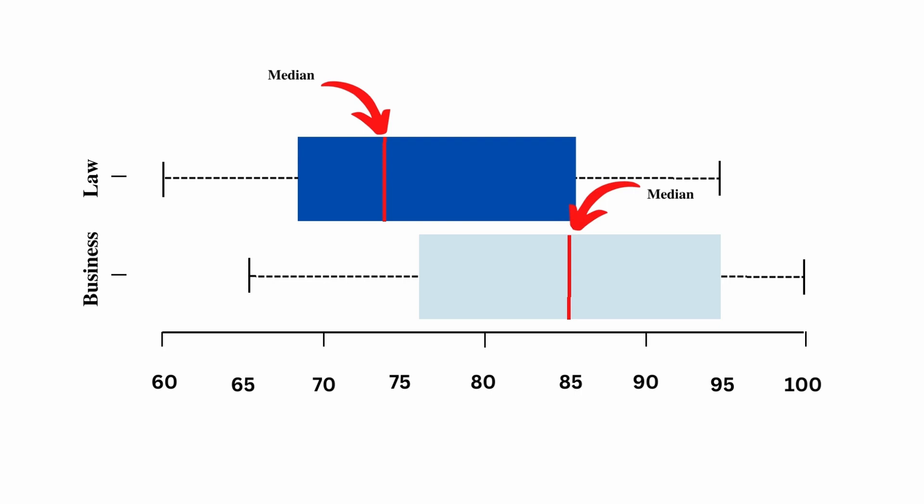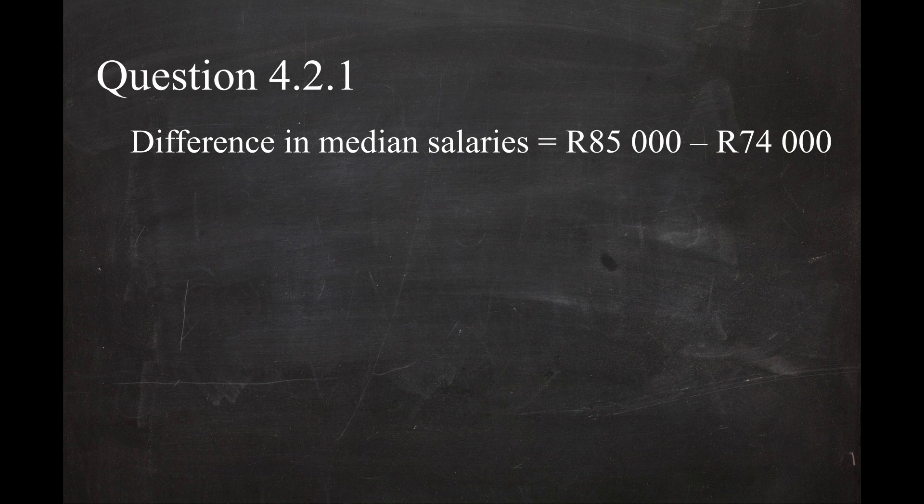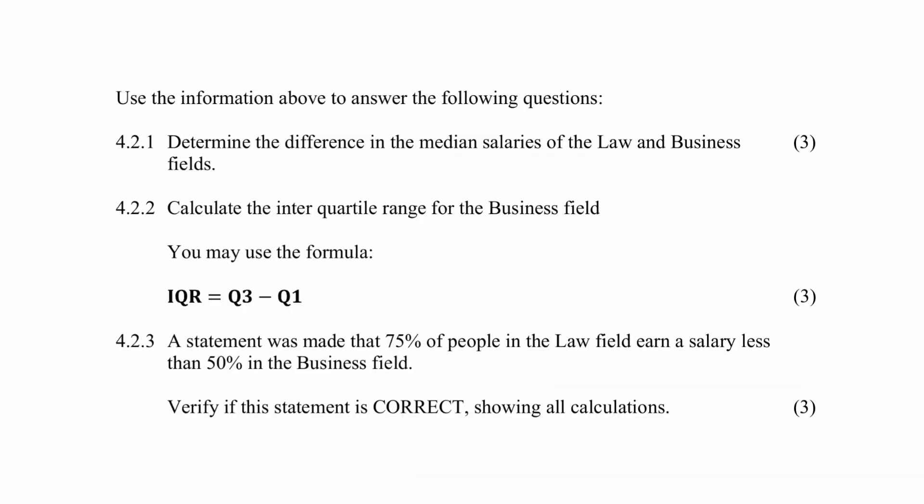The median salary for law is about 74,000 rand and the median salary for business is about 85,000 rand. So the difference between the median salaries is 85,000 rand minus 74,000 rand, and this equals 11,000 rand.